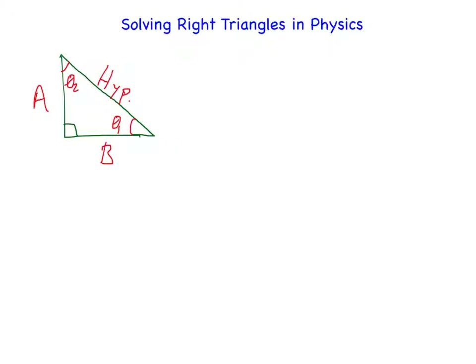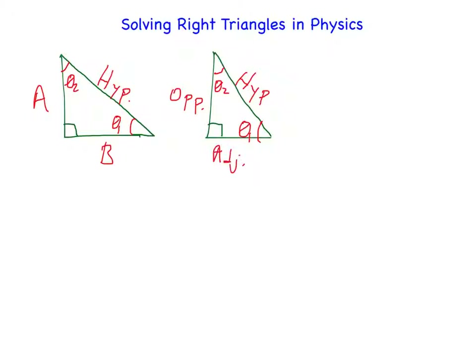What we are going to do is learn how to name the triangle. The way we name right triangles in physics is based off of our thetas, so you have to decide which angle you're going to name the triangle for. I'm going to pick theta 1. Since I'm picking theta 1, the hypotenuse is still called the hypotenuse, but side A is the side opposite of theta 1, so it's called the opposite. And side B, in relation to theta 1, is adjacent to it, so we call that side adjacent.